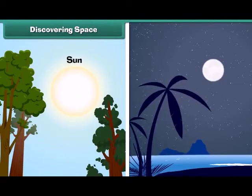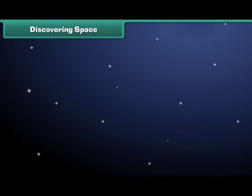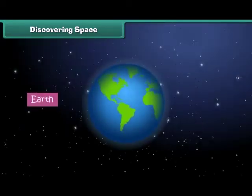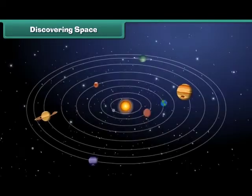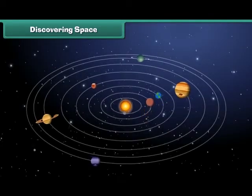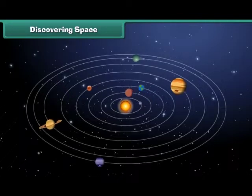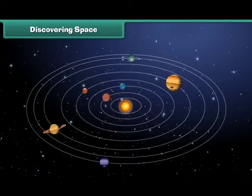The Sun, Moon and the stars that we see in the sky are all located in space. The Earth on which we live is also in space. Everything from the small dust particle to the large planet is placed in space.